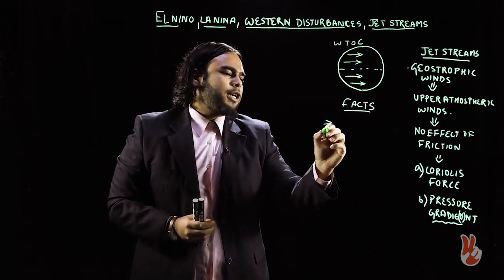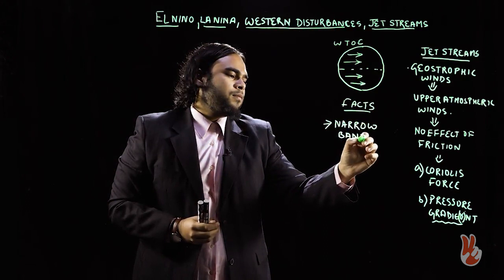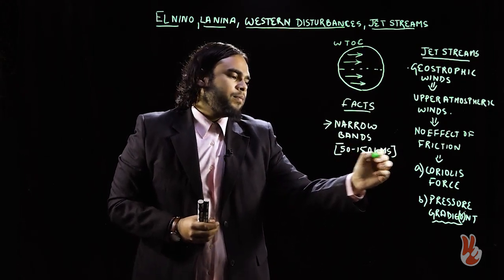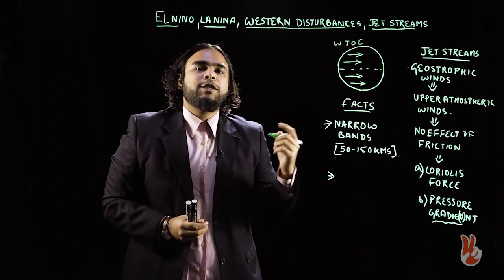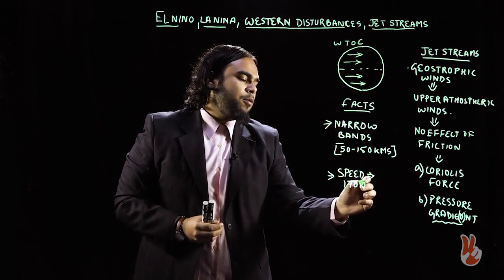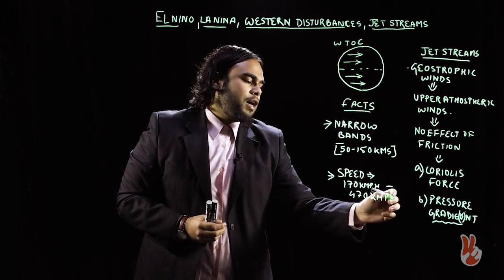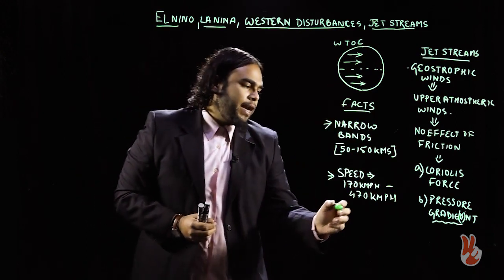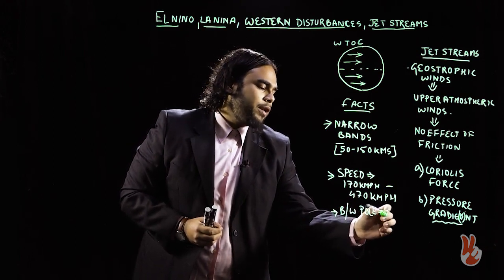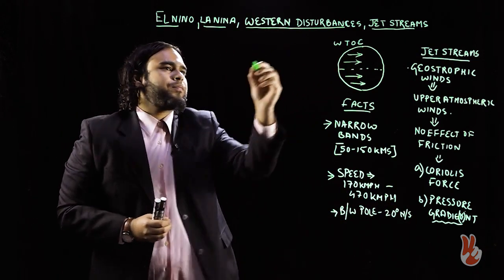Jet streams are narrow bands — they extend between 50 to 150 kilometers in width. Their speed varies between 170 kilometers per hour and 470 kilometers per hour. They extend between the polar region and 20 degrees north or south latitude.